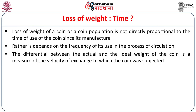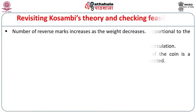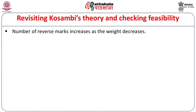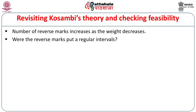The differential between the actual and the ideal weight of a coin is a measure of the velocity of exchange to which the coin is subjected. Velocity is the measure of the rate of movement, and this cannot be uniform for all coins. Revisiting Kosambi's theory — the increase in reverse marks as weight decreases can really happen, but marks on the reverse cannot be put at regular intervals of 12 years as Kosambi mentioned.